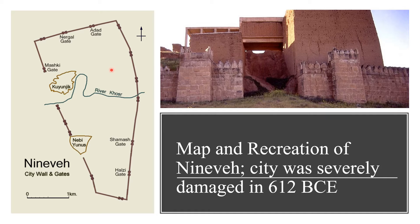The gates of the city are named after various Mesopotamian gods, including Shamash — the god of the sun and justice — and Nergal — the god of death. The city was severely damaged and almost destroyed in the year 612 BCE.